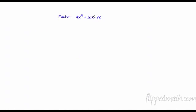Factor this out. Sullivan made a mistake, this should be 4x⁴ plus 12x² minus 72x³. First of all, we have to do the greatest common factor. So 4, 12, and 72.